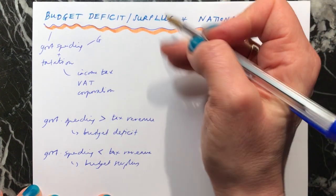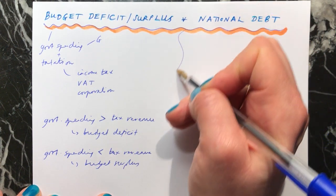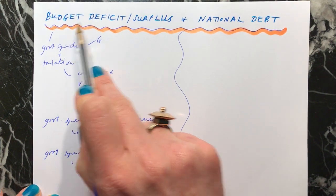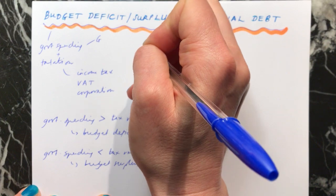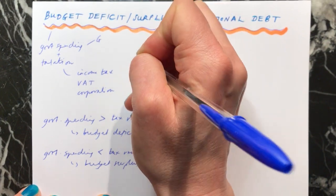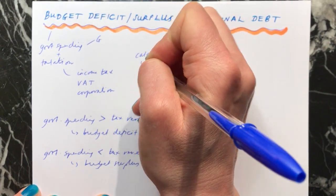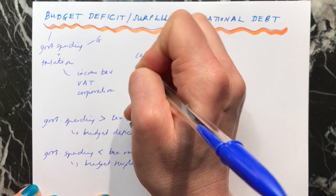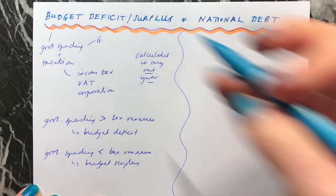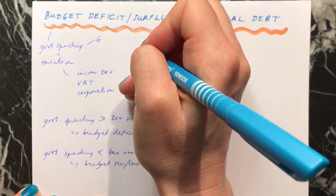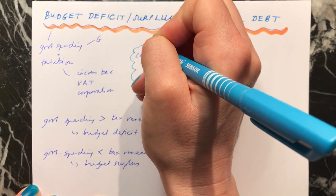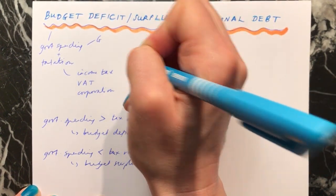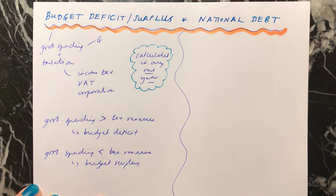The big thing to remember here is that if we're talking about a budget deficit or surplus, this is being calculated in any one year. So you're asking: in this year, how does government spending compare to the tax revenue that's being collected? It's measured in that one year.